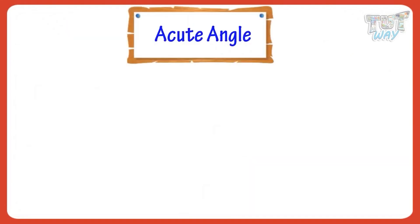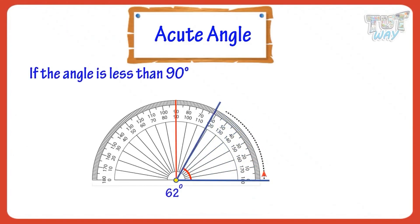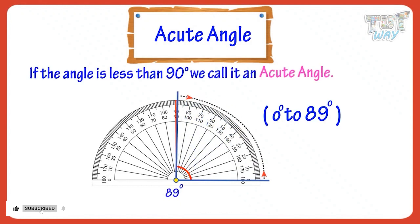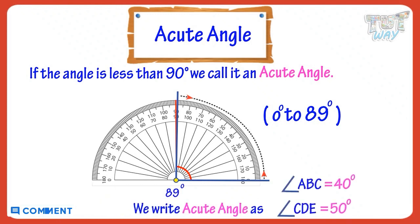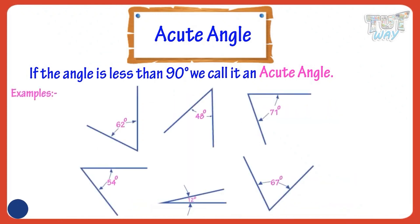Acute angle: if the angle is less than 90 degrees, we call it an acute angle. This is the symbol we use for an acute angle. We write acute angles like this. Now let's see some examples of acute angles.